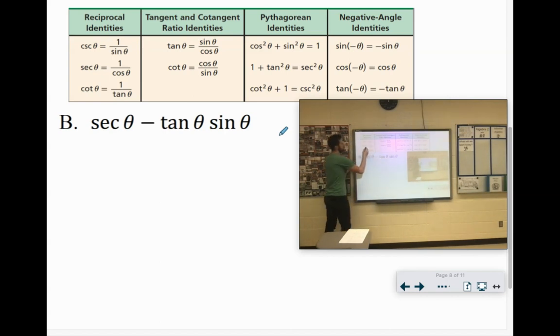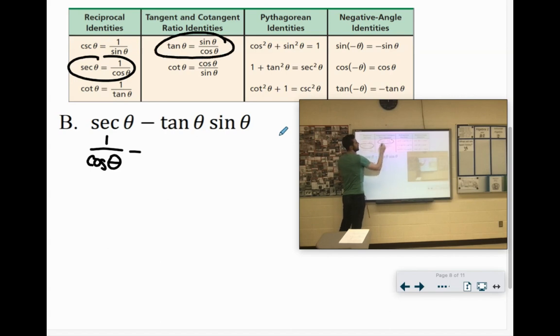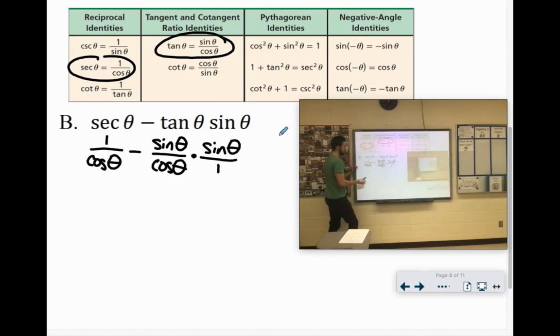Secant of theta minus tangent of theta sine of theta. We're getting it all into cosines. So secant is 1 over cosine. Let's see. Tangent, if we look up here, tangent is sine divided by cosine. We're multiplying that by sine of theta. Which if you multiply a whole thing by a fraction, you just multiply it in the numerator. Or you can put both over 1 there. So if we kind of clean that up, there's nothing we can do with 1 over cosine yet.